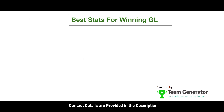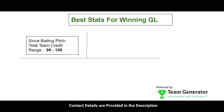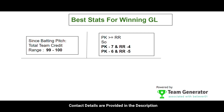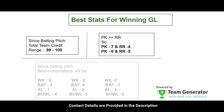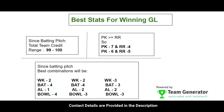Since it is a batting pitch, we can go with a credit range of 99 to 100 for the total team credit. Both Punjab Kings and Rajasthan Royals are almost equal, so we can go with a team partition of seven players from Punjab Kings and four from Rajasthan Royals, or six from Punjab Kings and five from Rajasthan Royals.